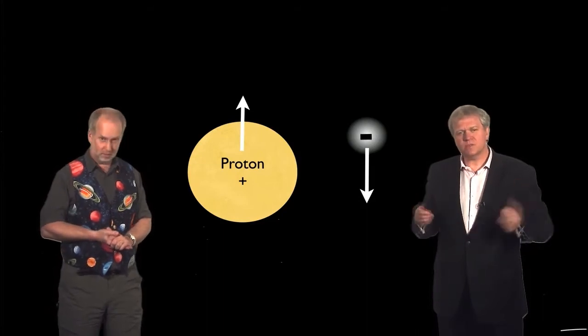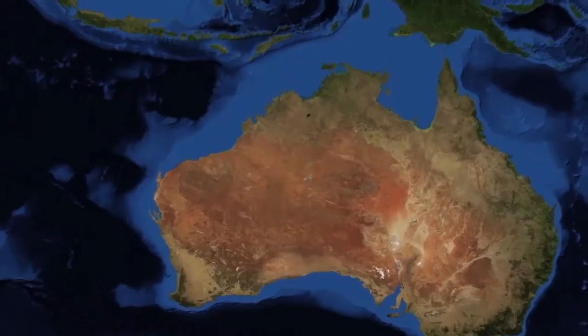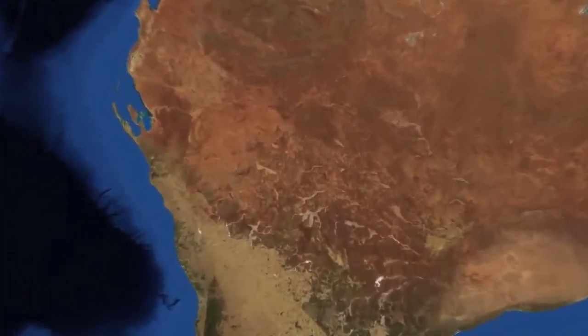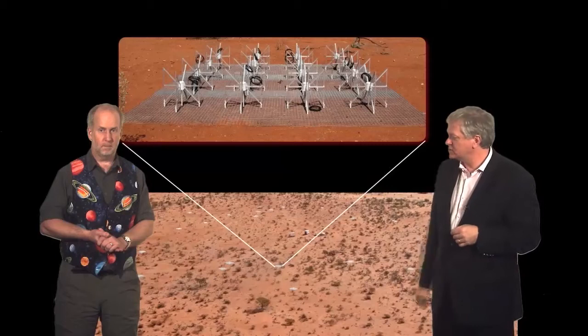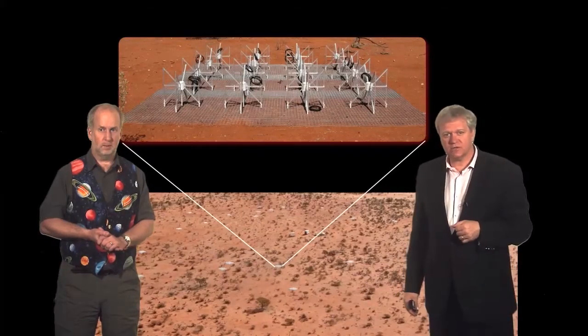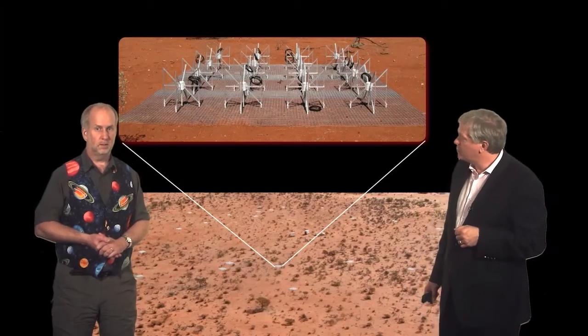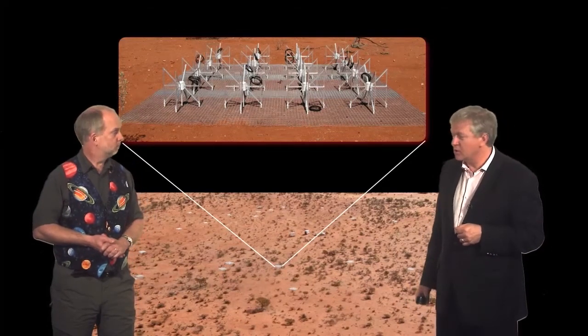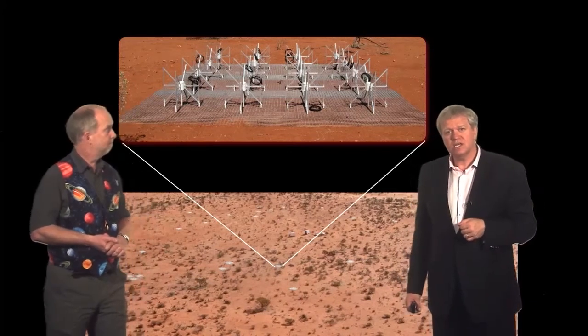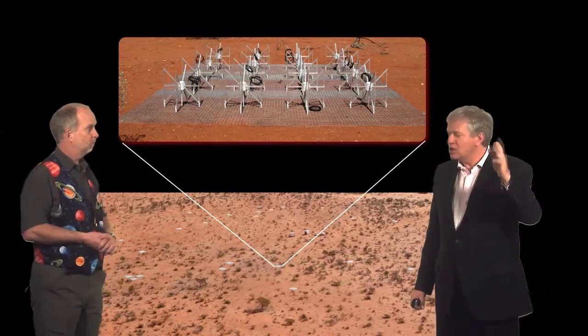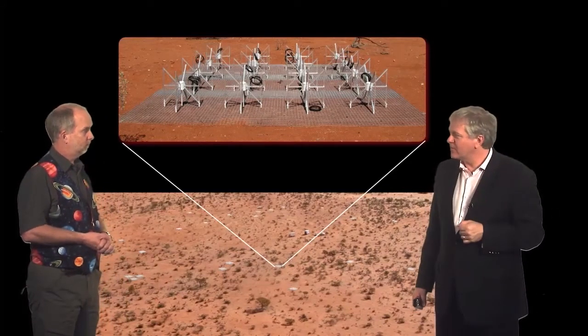So one of the great things about living in Australia is there's a lot of Australia that has very, very little in it, including the Western Australian desert. And here at a place that we call Murchison, the desert essentially has no people and no FM radio stations. And we, with partners in the United States in the form of MIT and Harvard, and also the country of India, have built a new type of radio telescope called the Murchison Widefield Array that is literally able to tune in this distant radiation without interference from FM radio stations.